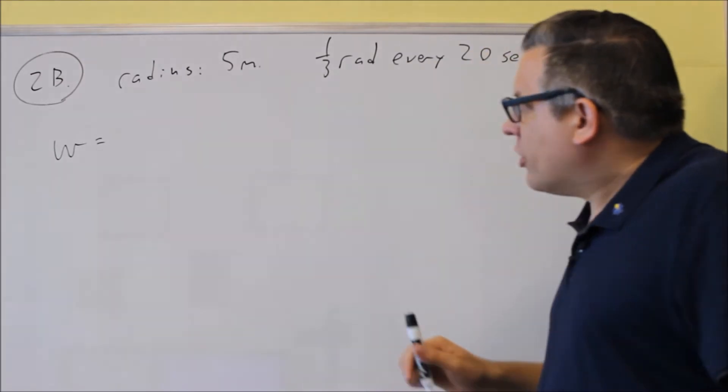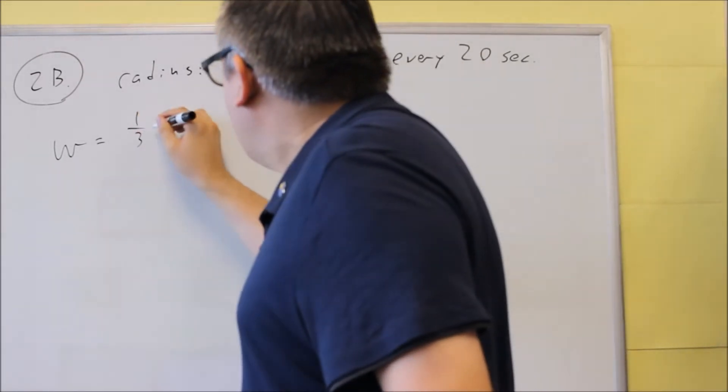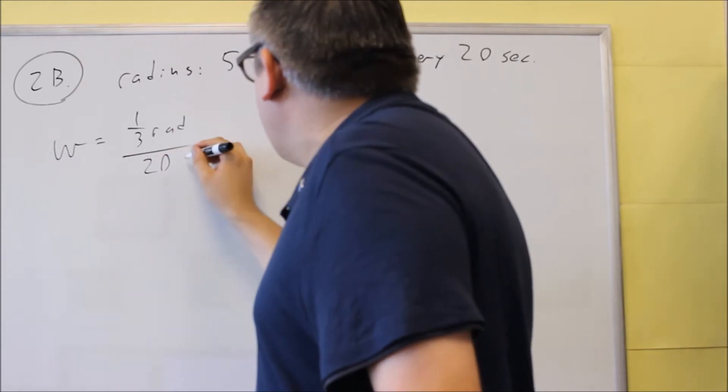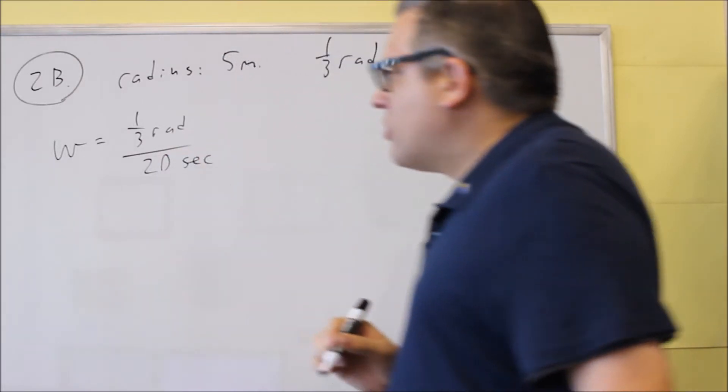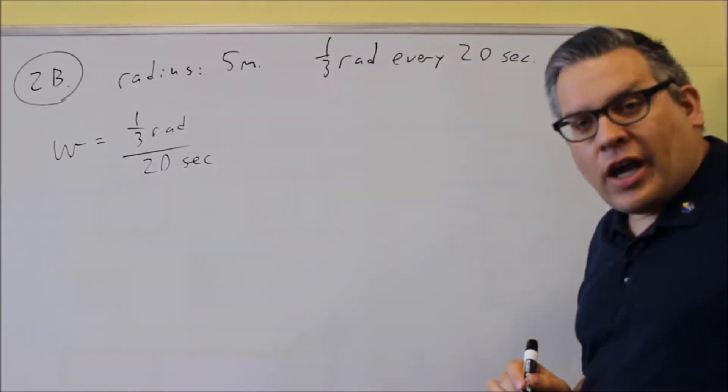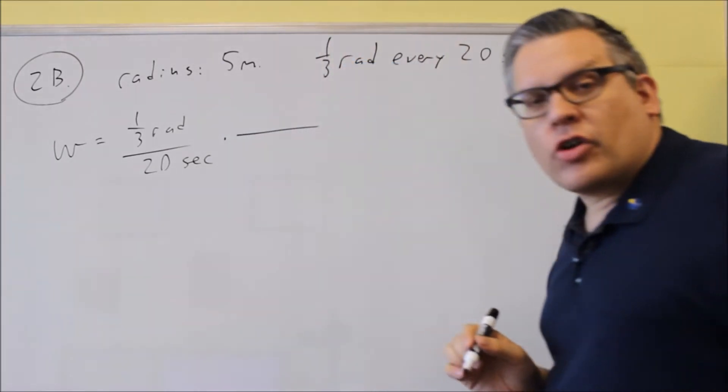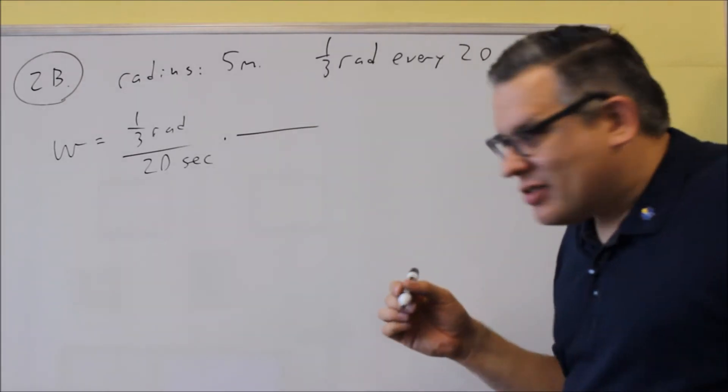First, we want to put the 1/3 radians for every 20 seconds. So we're going to start with that. Next, we want to do a conversion. We want to change the seconds into minutes.